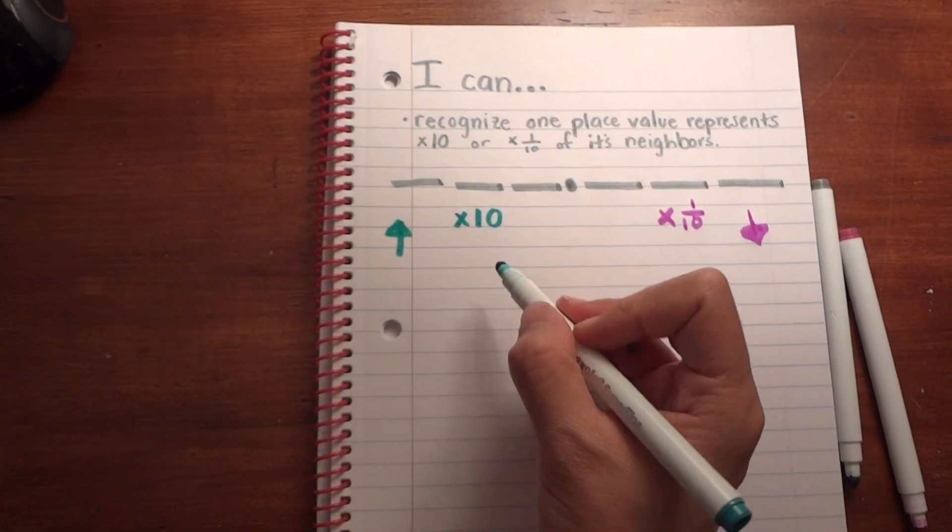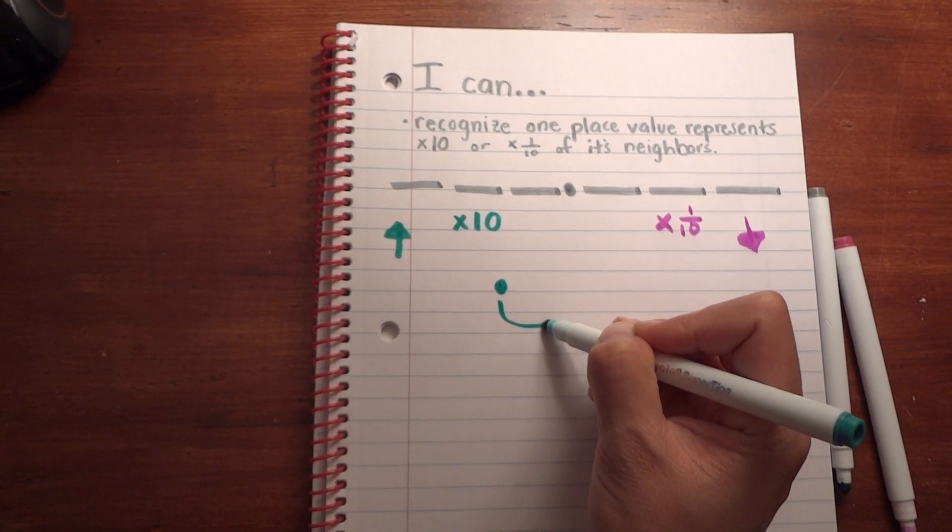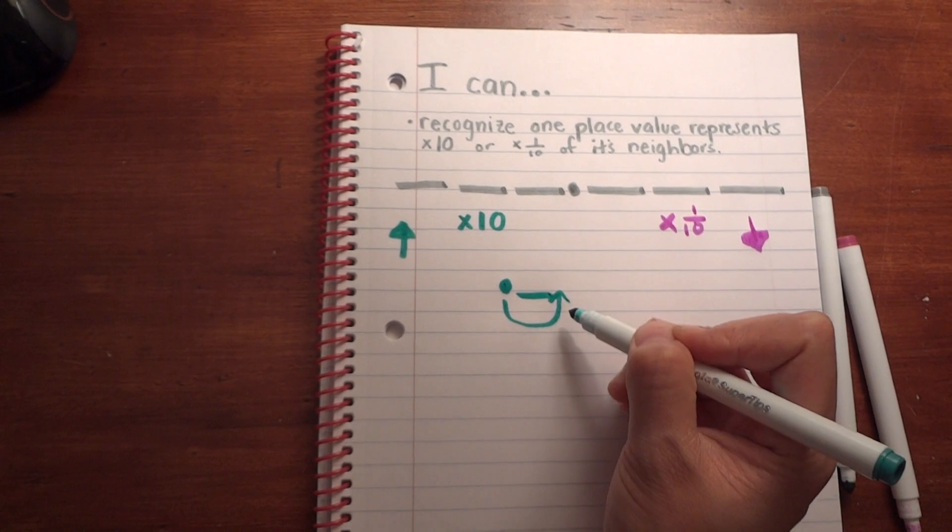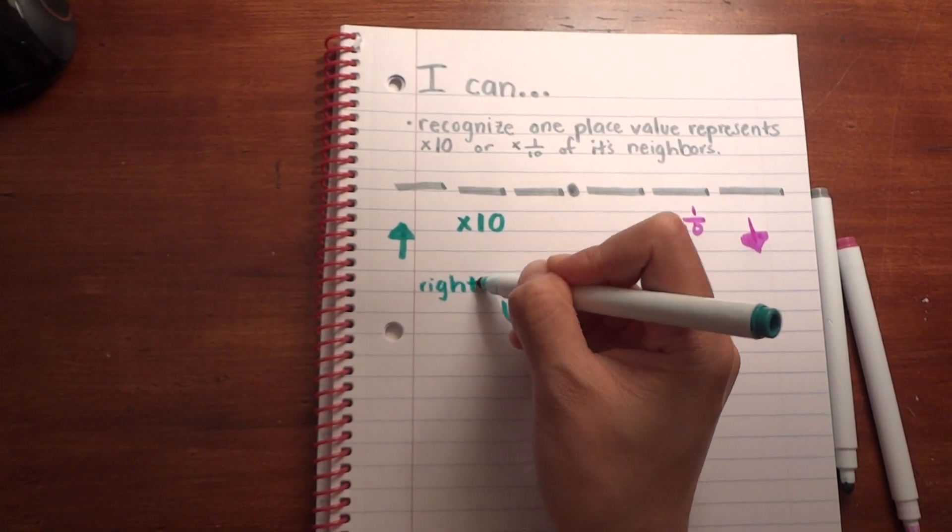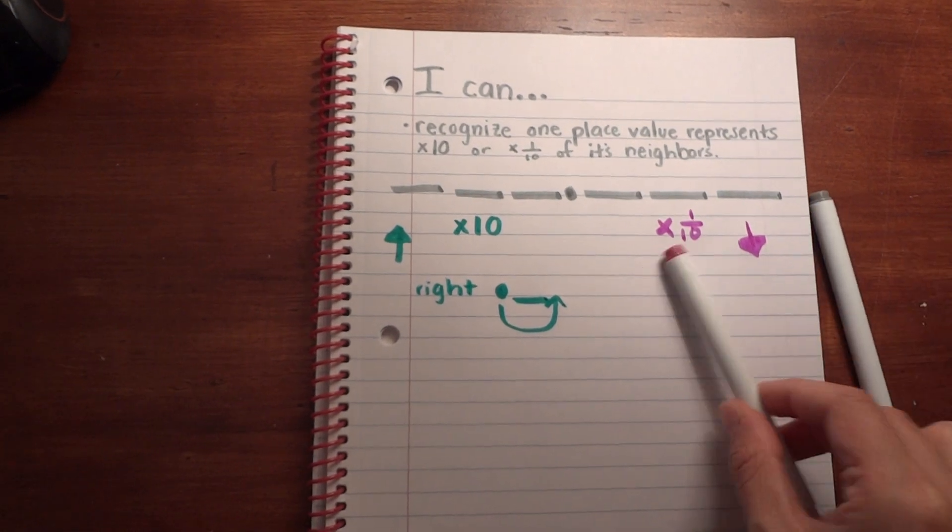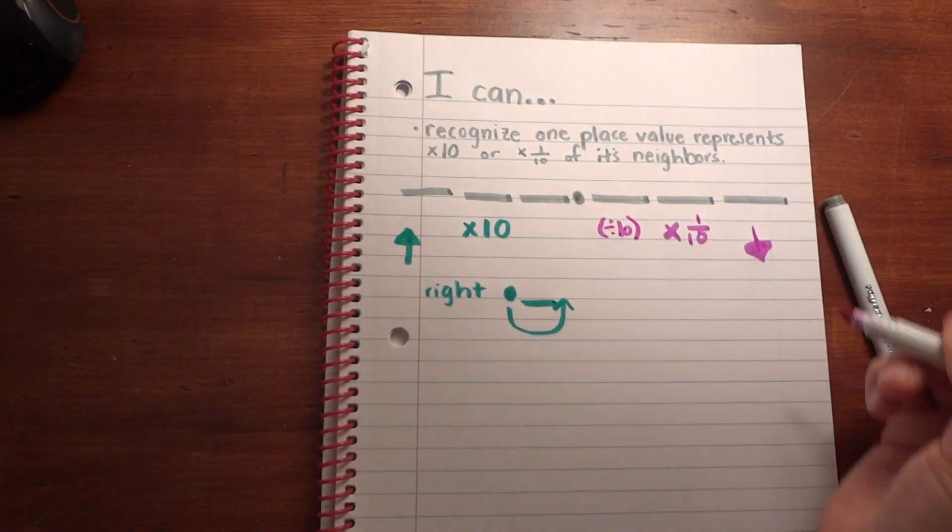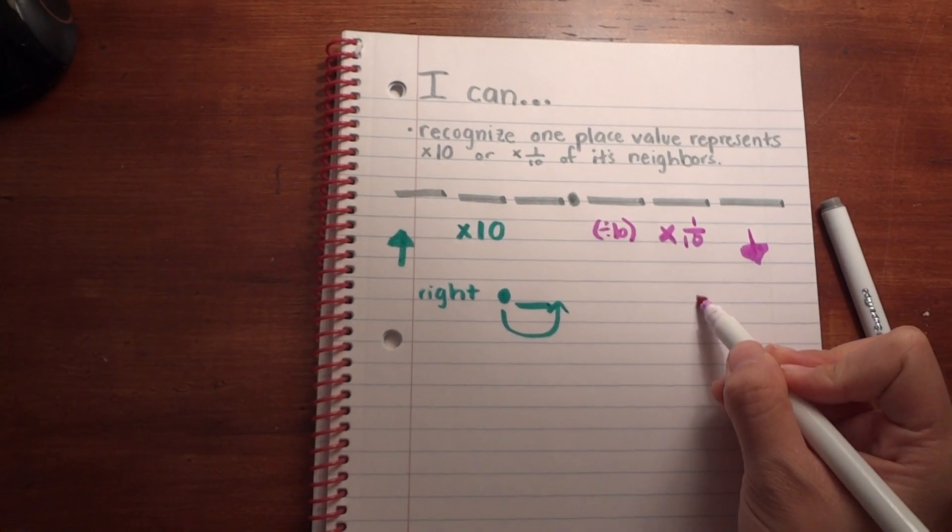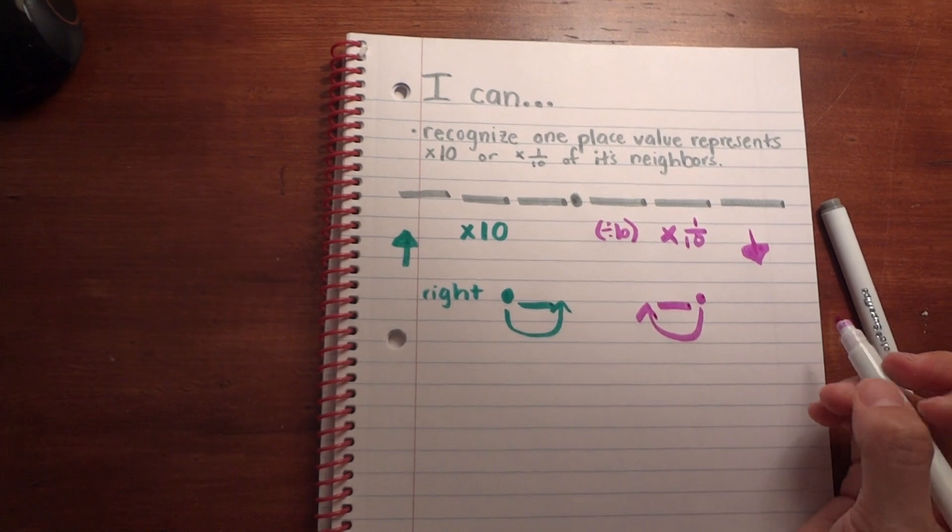The procedure behind that is: if you multiply by ten, you're going to move that decimal place over one place value to the right. If you multiply by one-tenth, which is the same thing as dividing by ten, you're going to move it one place over to the left because you're decreasing its place value.